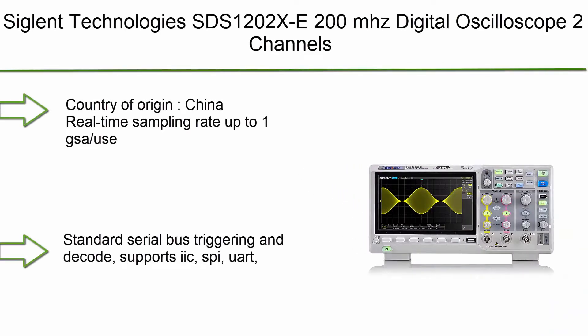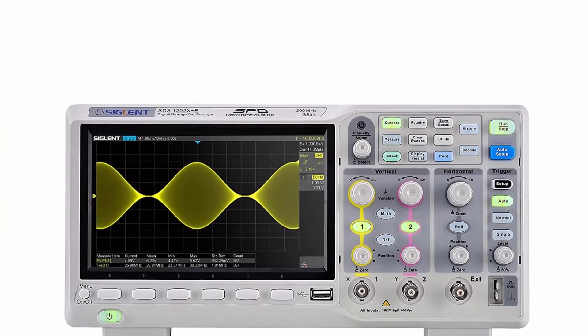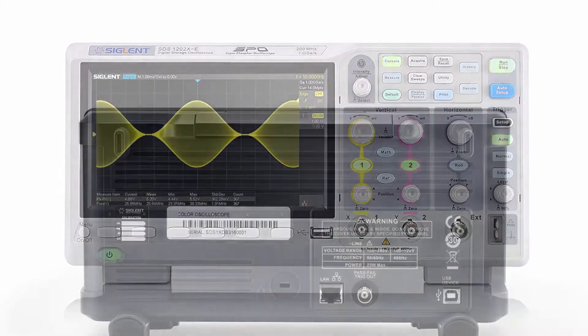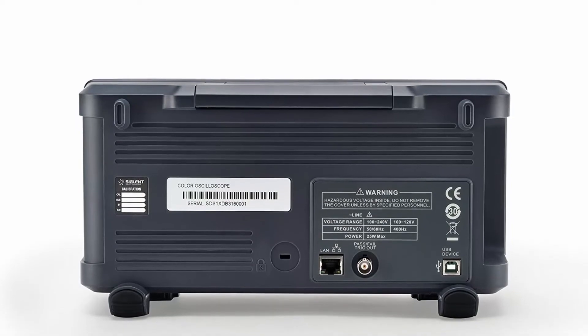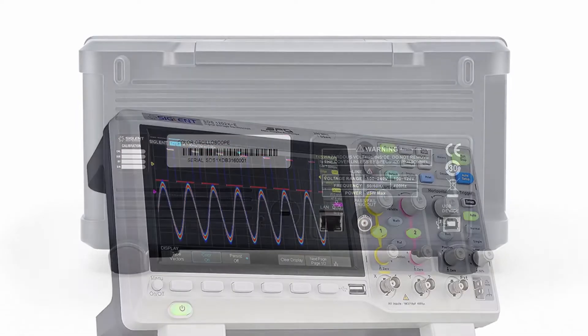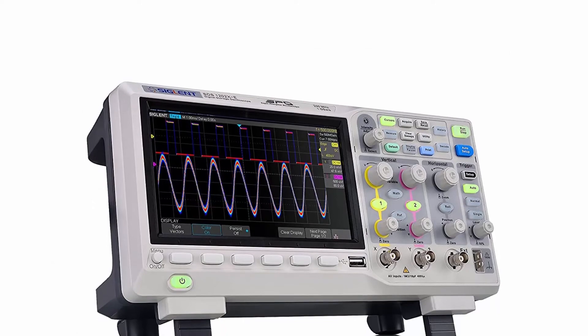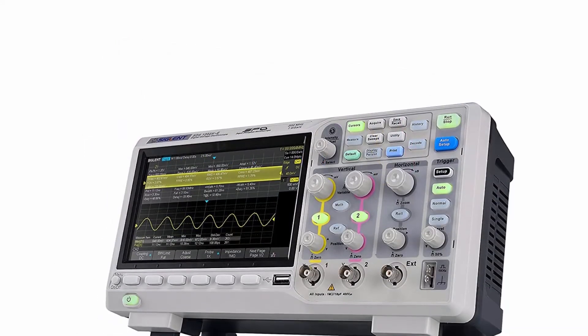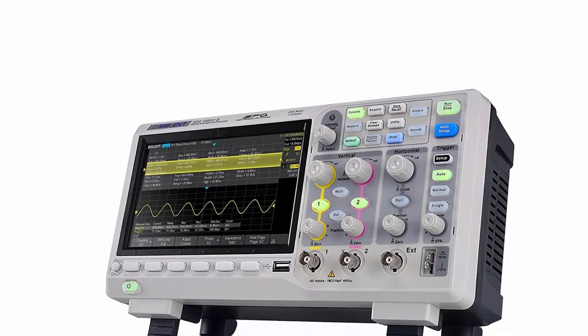Top 3: Siglent Technologies SDS-1202XE 200 MHz Digital Oscilloscope, 2 Channels. Country of origin: China. Real-time sampling rate up to 1 GSA/s, record length up to 14 Mpts. Standard serial bus triggering and decode — supports I2C, SPI, UART, RS-232, CAN, and LIN.